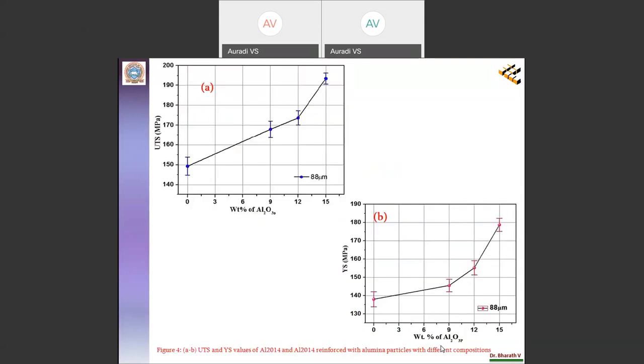Figure 4A and 4B will show the increase in the UTS and yield strength values of the produced composite compared to the base alloy.